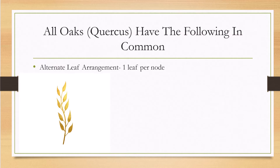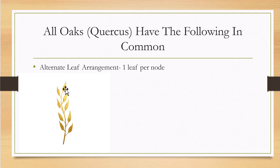All oaks have alternate leaf arrangement, meaning one leaf per node. A node is a site of vegetative growth. You'll have one leaf, go up the stem a bit, then another leaf on the other side — creating a zigzag pattern going up the stem. That is called alternate leaf arrangement. The two other types are opposite — two leaves per node — and whorled, which is three or more leaves per node.